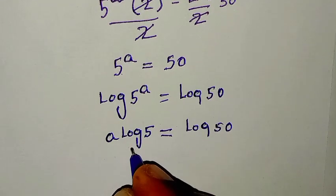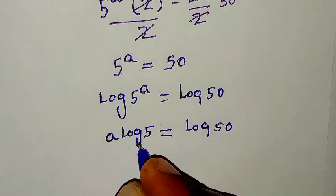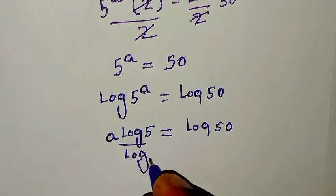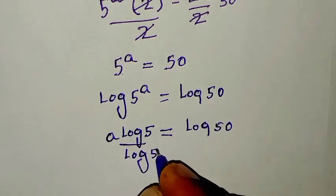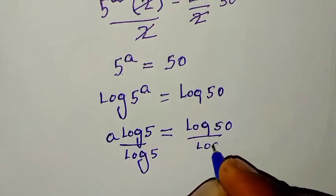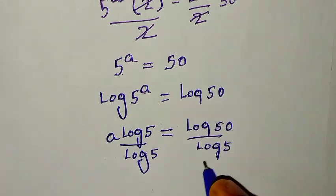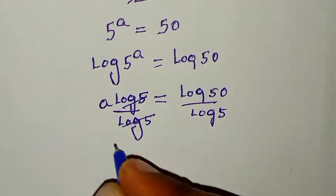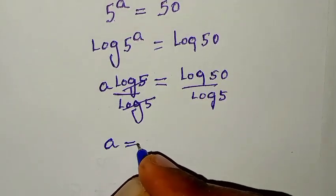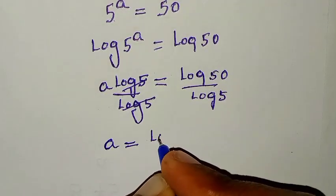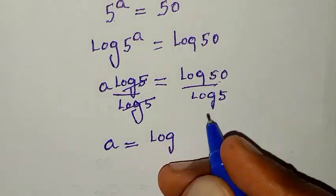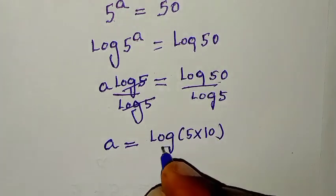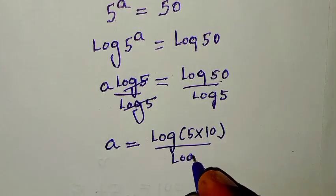Then we will divide by log of 5 on both sides. This and this will cancel. Then it will be a is equal to log of 50 over log of 5. Now, 50 is the same as 5 times 10, so we have log of 5 times 10 over log of 5.